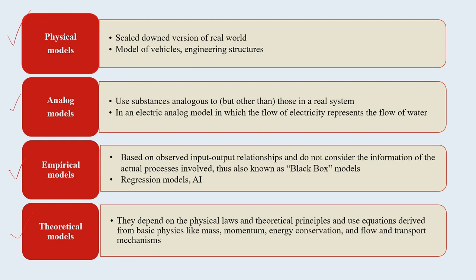In physical models, we try to utilize a scaled-down version of the real world. As discussed in the previous lecture, modeling tries to mimic what is happening in the natural system. 100% mimicking of a natural ecosystem is almost impossible, but effort is always made to go as close as possible. Physical models include engineering structure models and vehicle models, where we try to mimic conditions of the real world physical nature system.